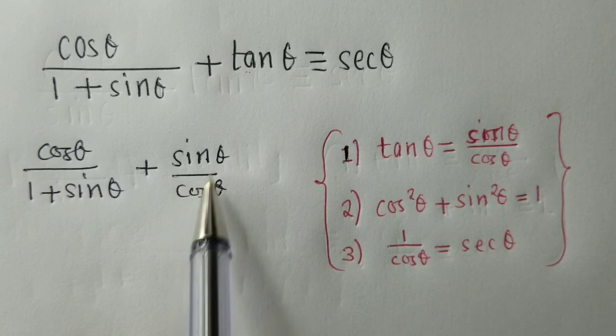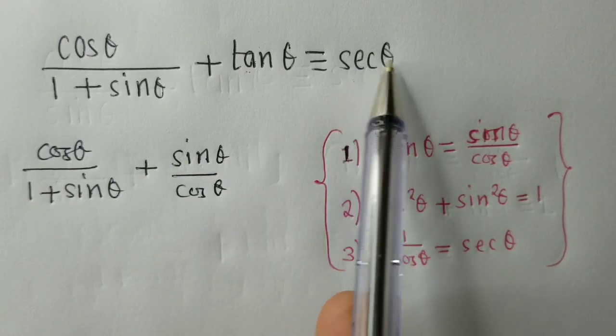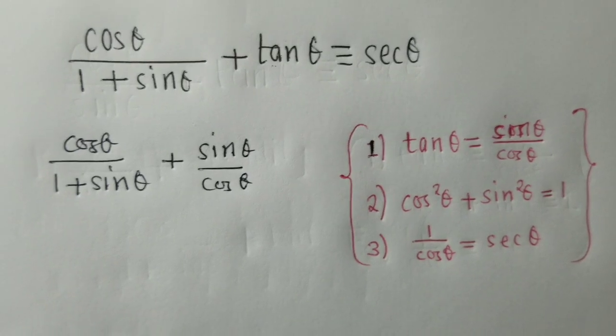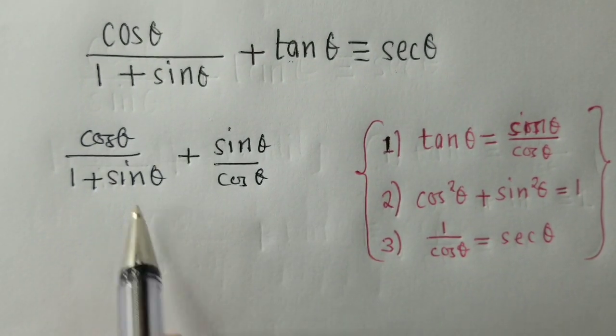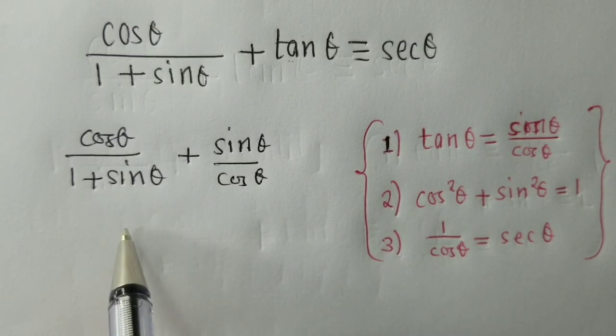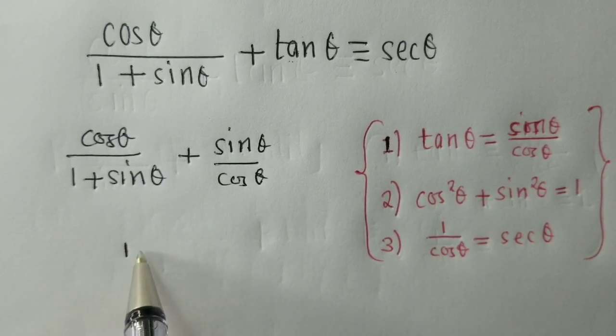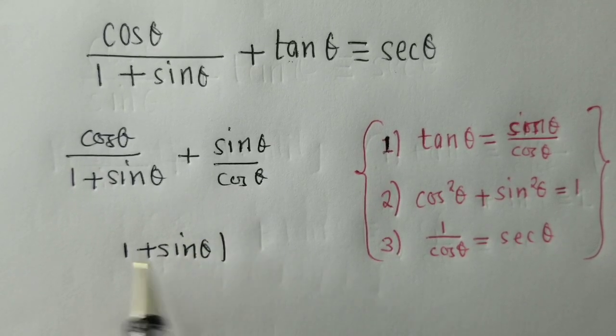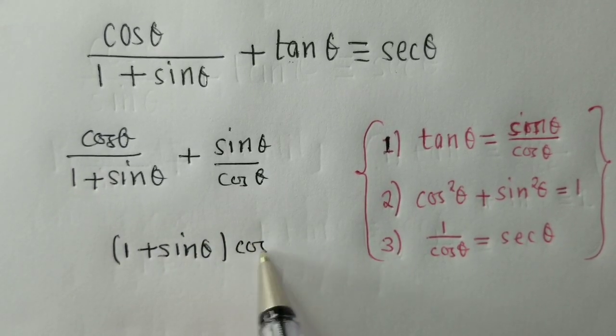We want to make sure that this will be equivalent to sec theta. Here, we apply our mathematics, we find the lowest common denominator, which is 1 plus sin theta and cos theta.